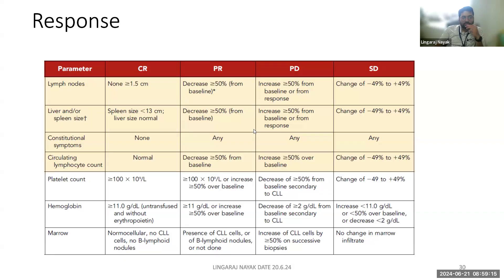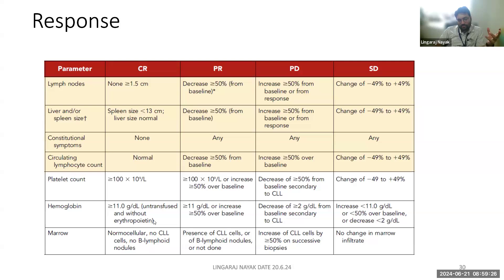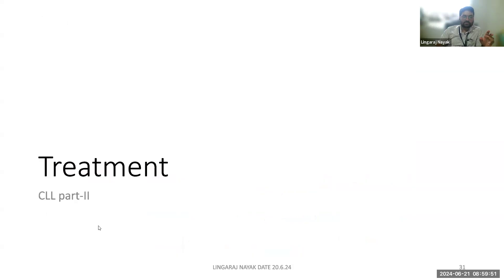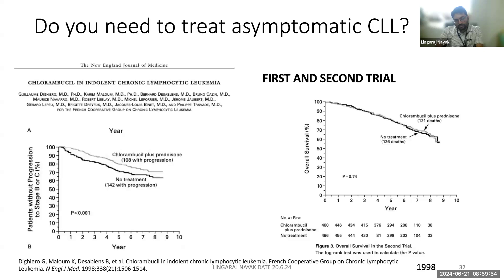After treating CLL, response is documented as complete or partial remission, based predominantly on marrow recovery — hemoglobin, WBC, and platelet count — and improvement in lymph node size. In clinical trials, CT scan is used to document nodal and spleen size for complete remission. In routine practice, response is assessed primarily by hematological parameters.